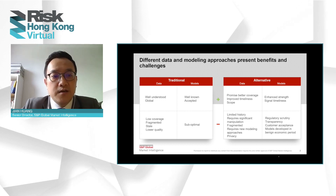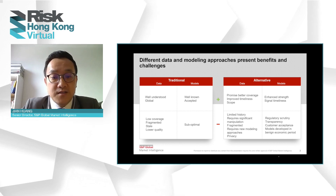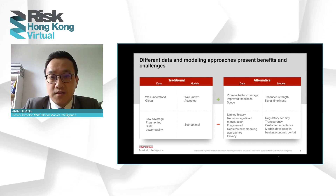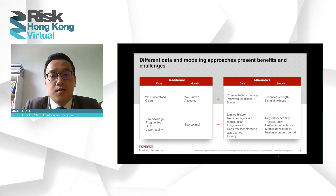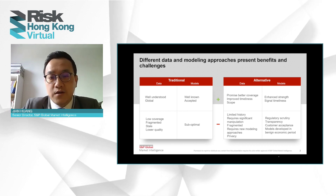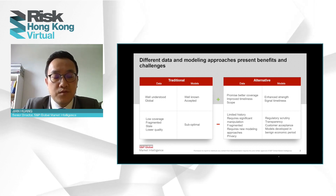On the other hand, alternative data normally has shorter history and is more fragmented, so it requires significant manipulation. It requires new analytics to analyze the data and generate insights. One needs to be very careful when handling alternative data to ensure compliance with regulations — for example, privacy protection laws.